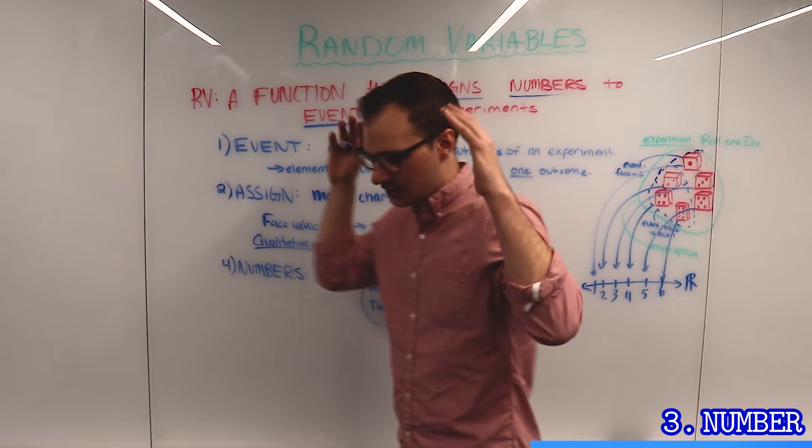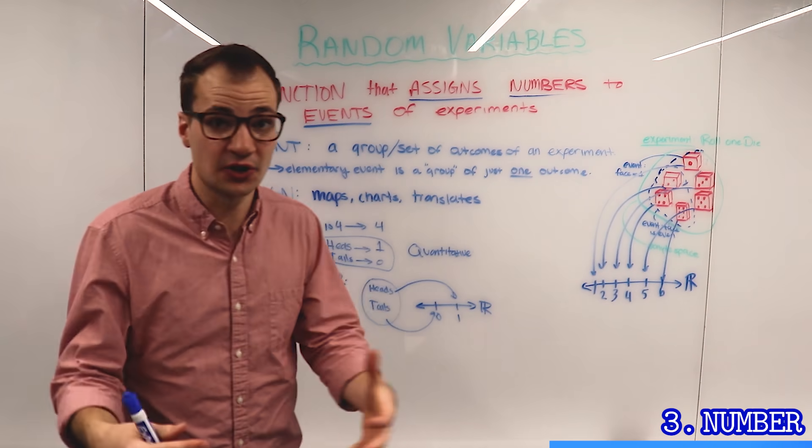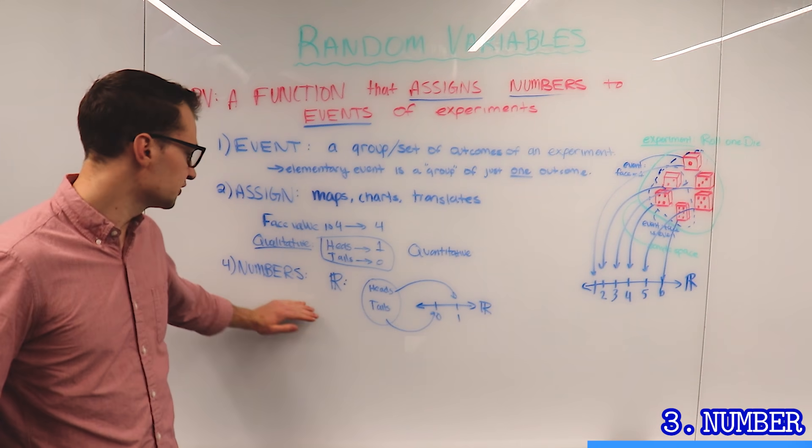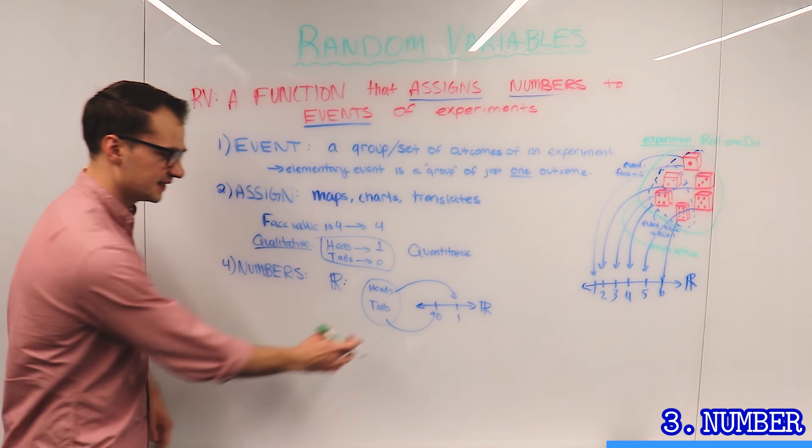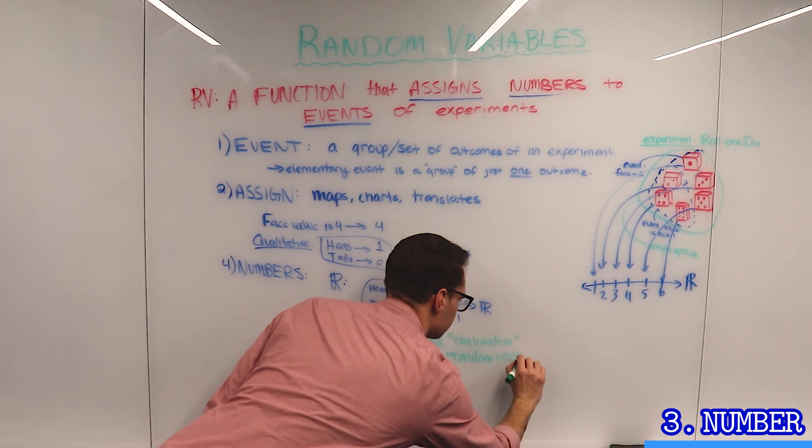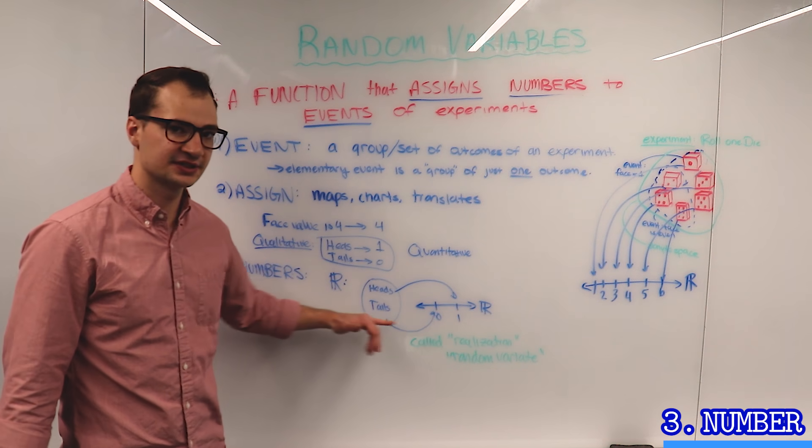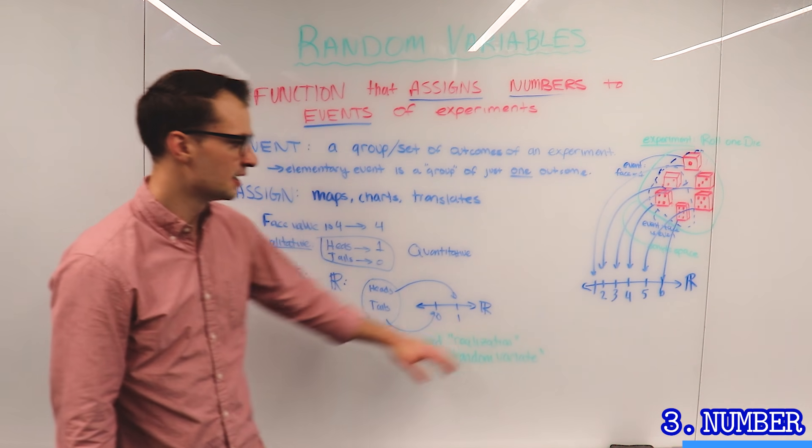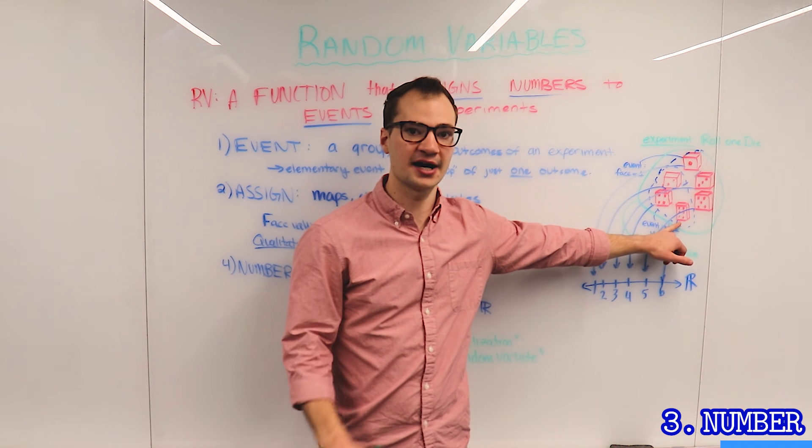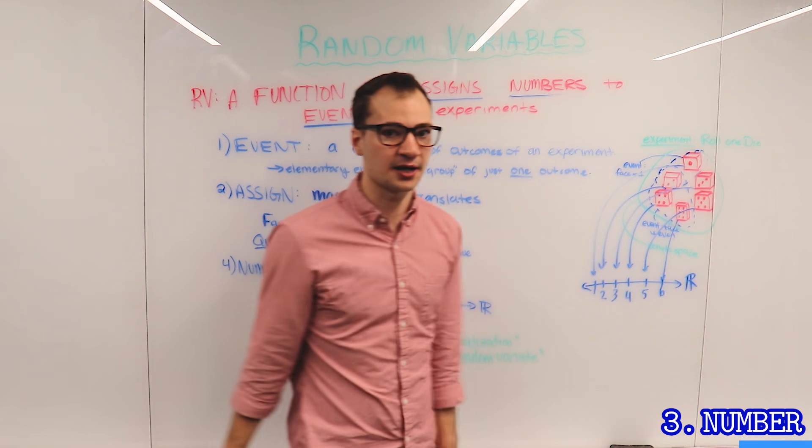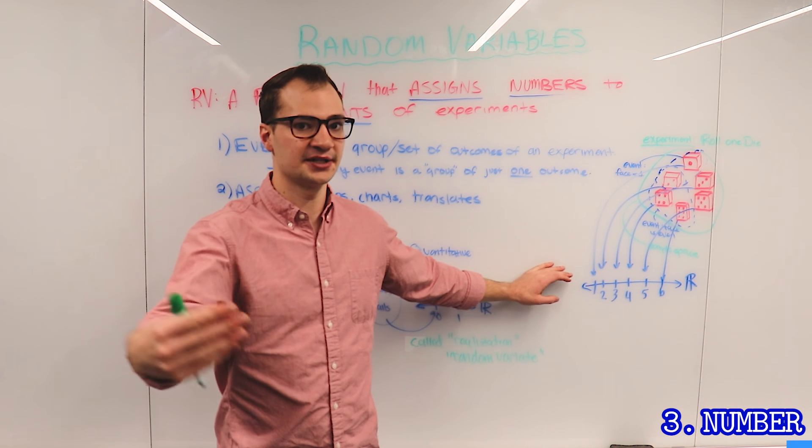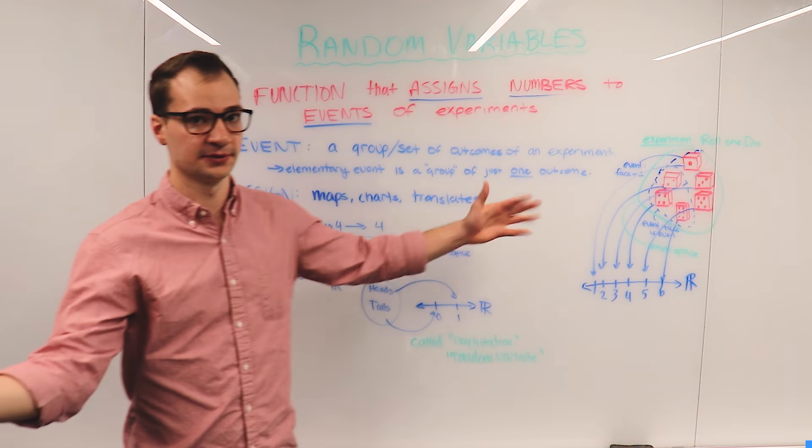Again, we're transforming some word or some result into a number. That's all we're doing. Now, a key piece of notation for the numbers is these numbers are called the realization or the random variant. One is the realization of flipping a heads. A six is the realization of rolling a die where a six comes up on top. 93.45 was the realization of the temperature tomorrow being 93.45 degrees.